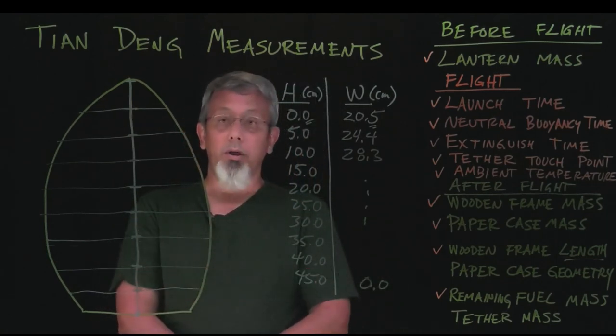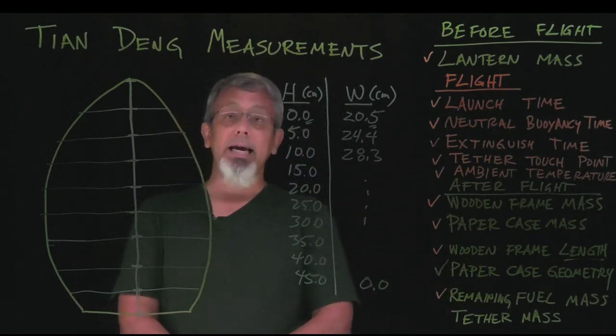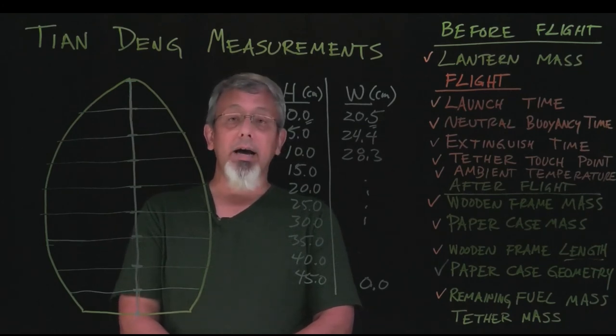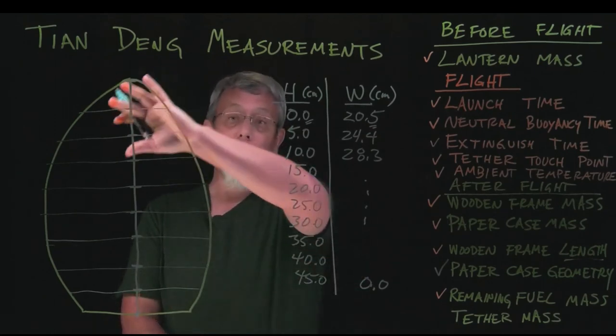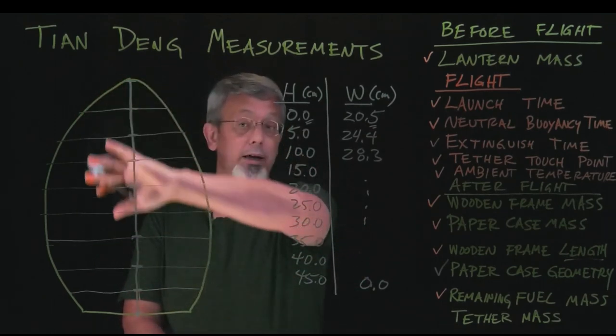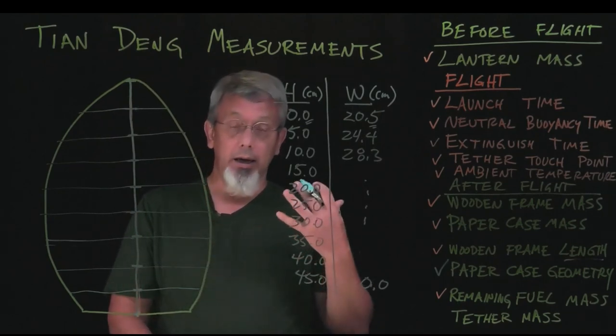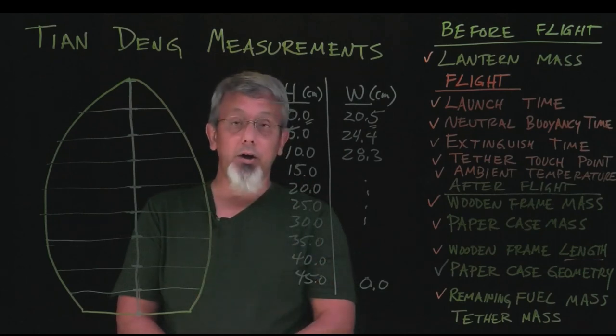So with that, we have recorded our paper case geometry, which is information we'll be able to use later to calculate a couple of important things, namely the area, the surface area of the lantern and the area of each face, which will help us determine the mass value to use for the paper, or a density value to use for the paper.